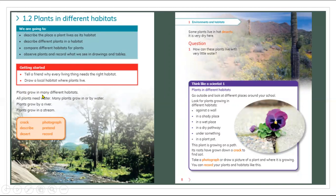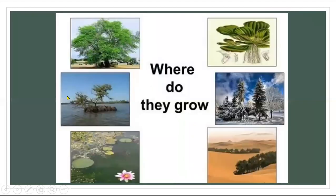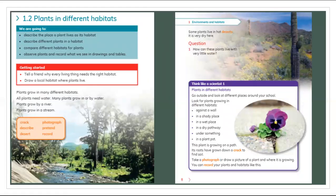Plants grow in many different habitats. All plants need water — many plants grow in or by water. Some plants grow under the earth and on or by water. Plants grow by a river, which is the habitat of those plants, and some plants grow in a stream.